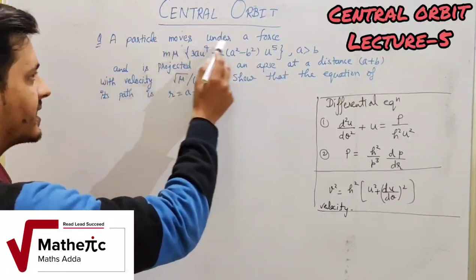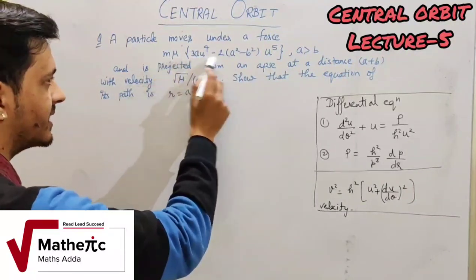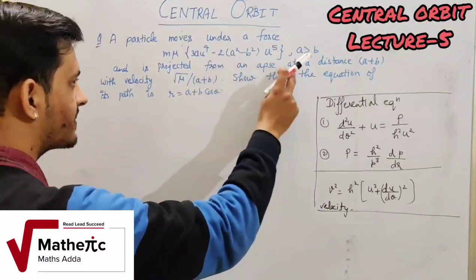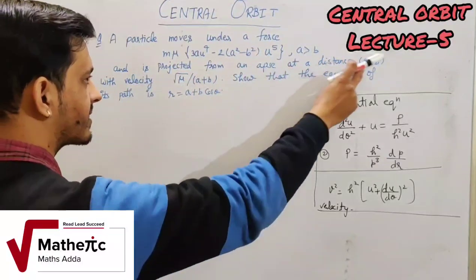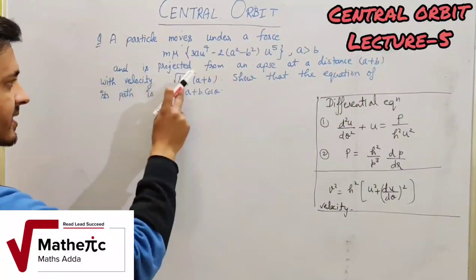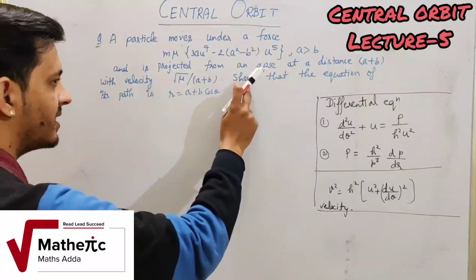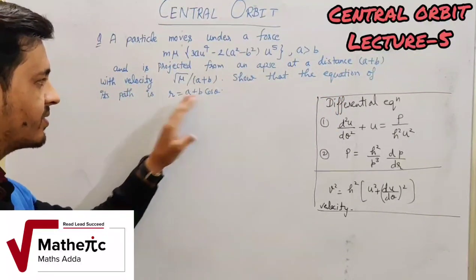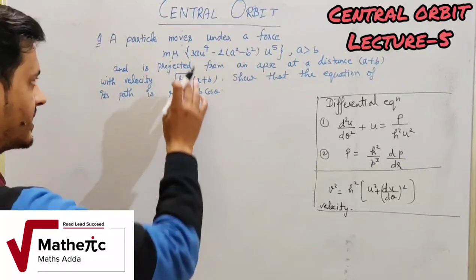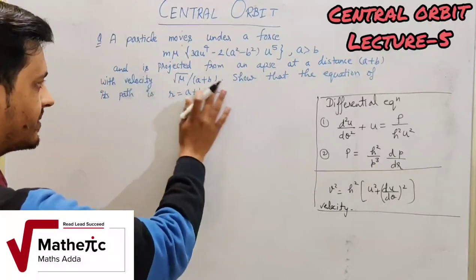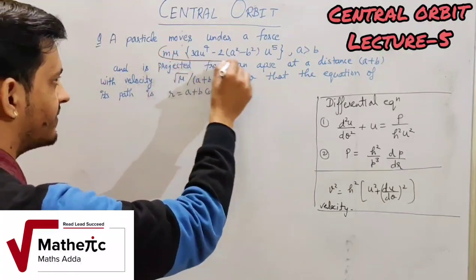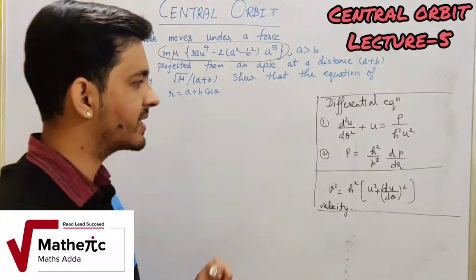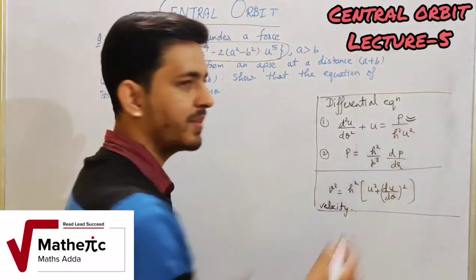A particle moves under a force and is projected from an apse at a distance (a + b) with velocity √(μ/(a+b)). Show that the equation of its path is r = a + b·cosθ. Focus on this — this is the force. If you have seen the derivation, we have to represent the force, which we represent as P.